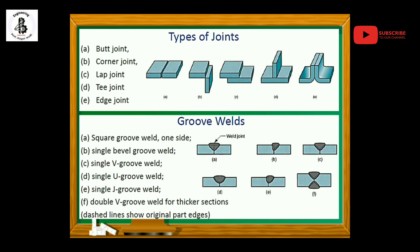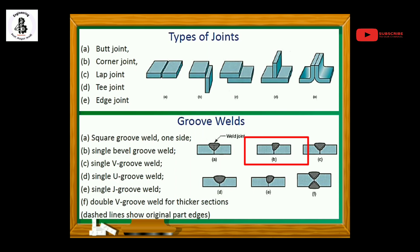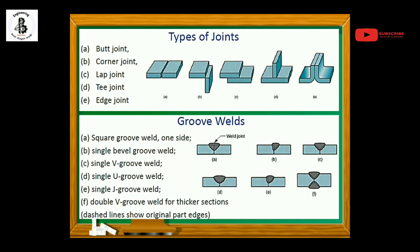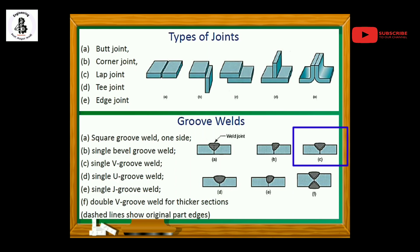The second groove weld is the single bevel groove weld. In that case, one of the base plates has a bevel-type groove performed on one face of the plate, then you carry out the welding process — as shown in the figure, it is indicated as a single bevel groove weld. In figure C, if you work with both base metals making a V-shaped groove on the top face, that is known as a single V groove weld.